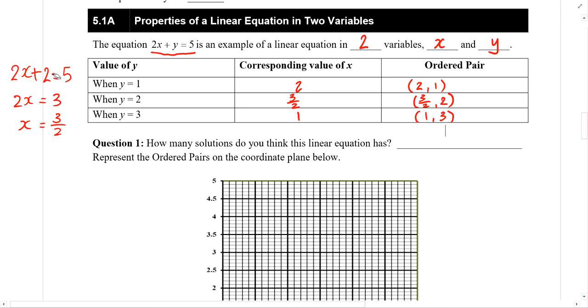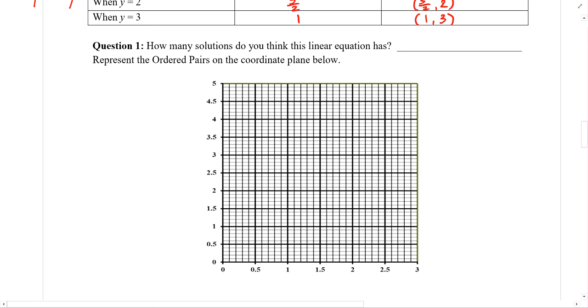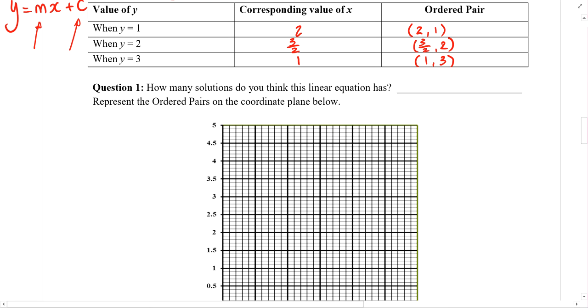I want to challenge you to rewrite the equation 2x plus y equals to 5 into the form y equals mx plus c. So just recall what your m stands for, what the c stands for. And here we again have 2 variables, x and y. They are the parts of the equation that can change. Now how many solutions do you think this linear equation has?